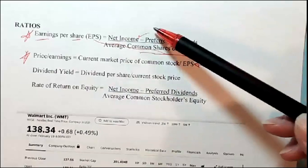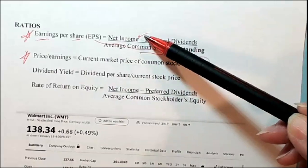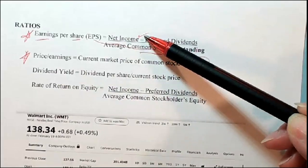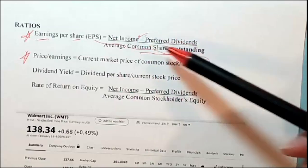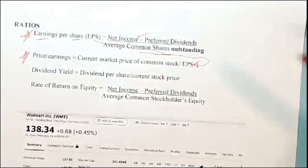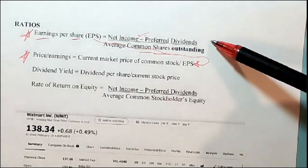Net income alone is hard to compare — if I've got 10 shares outstanding versus a million shares outstanding, it's difficult to compare just net income to net income. So earnings per share makes it a per-share figure. When we talked about dilution, the more shares you have, the more your earnings per share gets diluted.